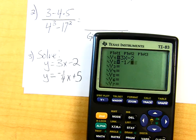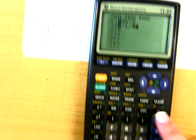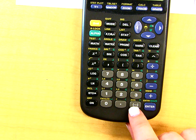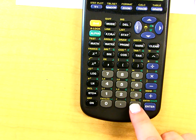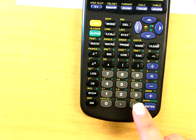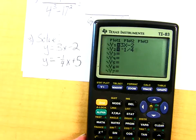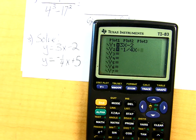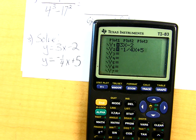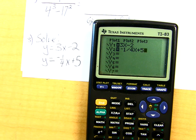Negative 1 fourth. Remember there's a difference between the negative key and the minus key. The negative button is under the 3. When you want negative, you use that. So negative 1 fourth X plus 5. There are my two equations entered.